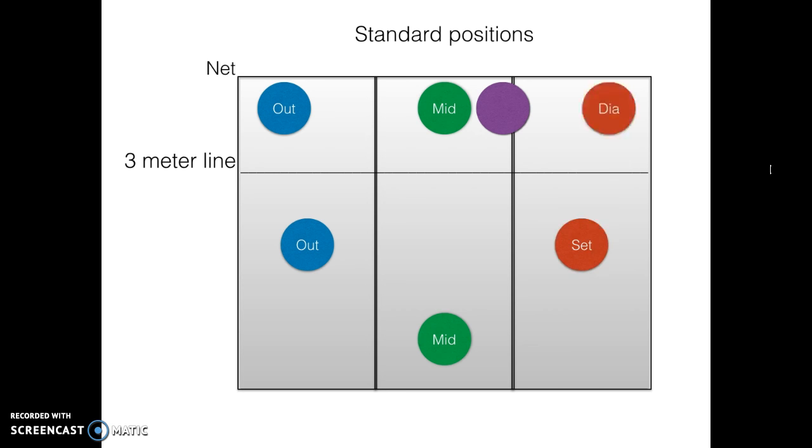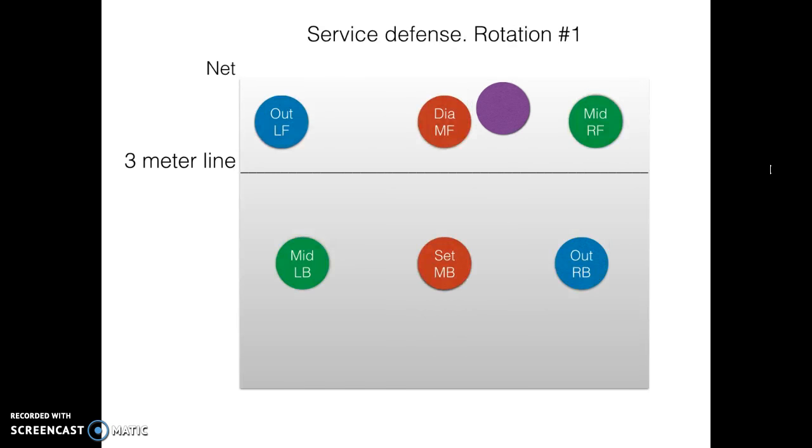Alright, so let's talk about receiving a service. When receiving a service, we always pass with three people and they cover the whole field. We leave the setter out of the service receive pass because we want the setter to be setting. But how do we get that done without breaking the rules of our starting position? Well, your starting position is restricted by the players directly next to you, in front of you or behind you.